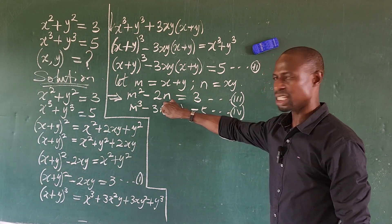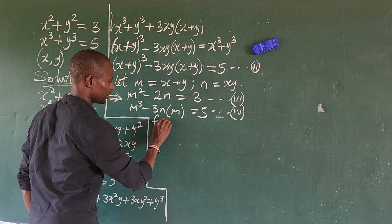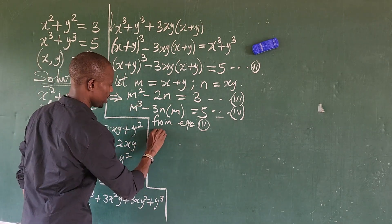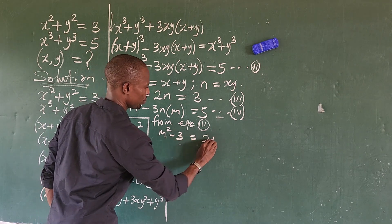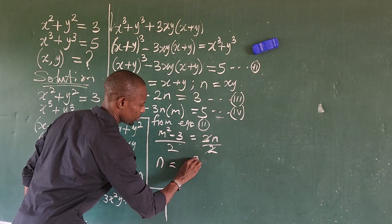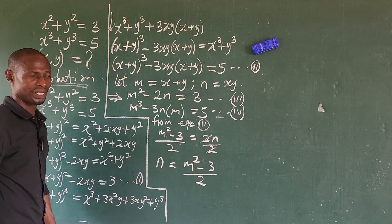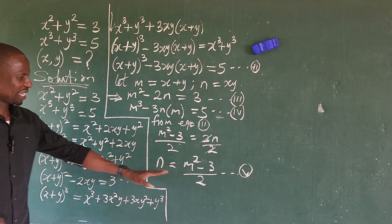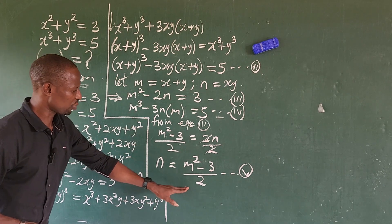Now let's make n the subject of the formula from equation 3. From m² − 2n = 3, rearranging gives n = (m² − 3) / 2. Let's call this equation 5. We'll now substitute equation 5 into equation 4.